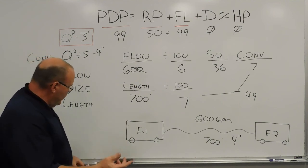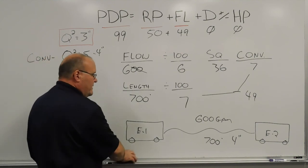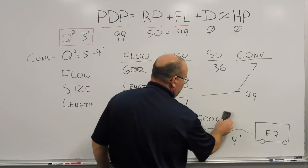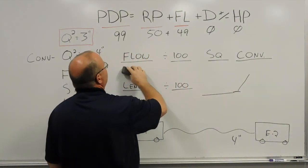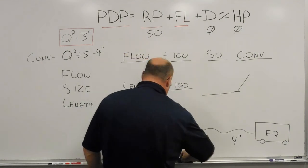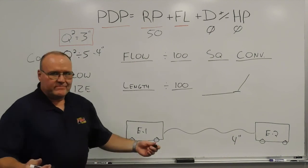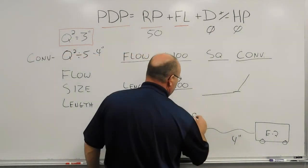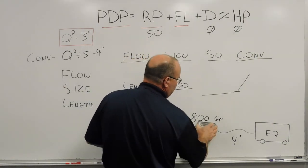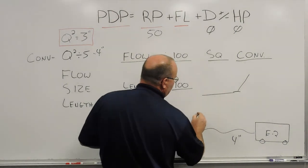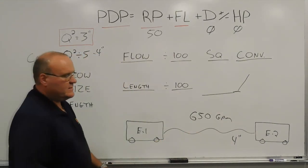We'll do this again with an in-between number — the math works the same with the whole numbers. We'll do that again with a different length and a different flow. Because we're still working with a relay, we're going to leave that residual pressure and our friction loss will be what changes. We'll do 650 gallons a minute, and we'll say it's 800 feet of 4-inch hose.